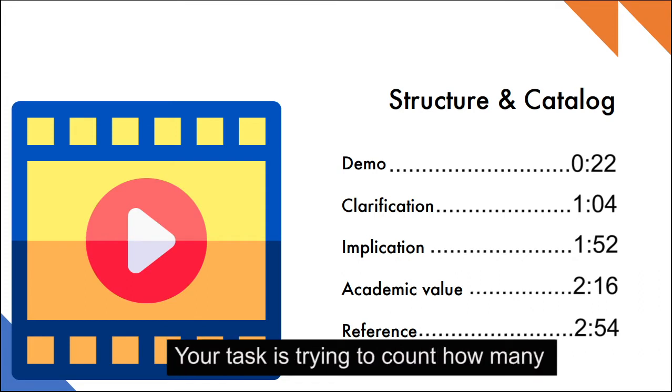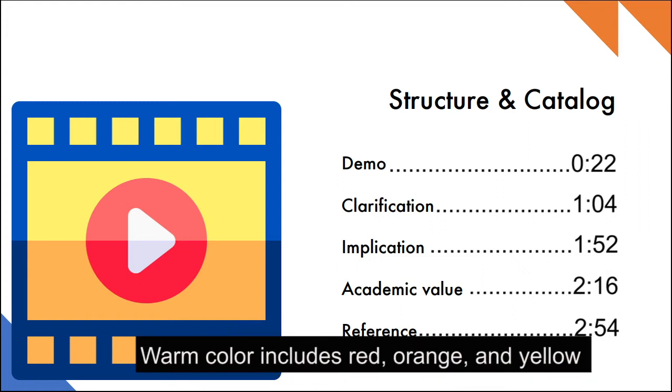Your task is trying to count how many warm color letters has been shown. Warm color includes red, orange and yellow. Ok, let's start.